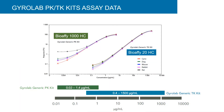These data demonstrate the uniformity of results across different preclinical animal matrices of cynomolgus monkey, dog, mouse, rabbit, and rat. The PK immunoassay dynamic range is from 0.02 to 1.4 micrograms per mL, and the TK immunoassay has a dynamic range of 0.4 to 1,500 micrograms per mL for the higher biotherapeutic doses used in toxicology studies.